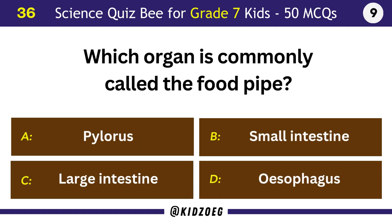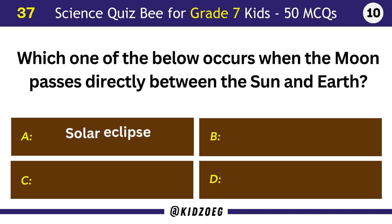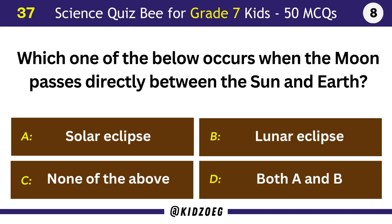Which organ is commonly called the food pipe? Esophagus. Which one of the below occurs when the moon passes directly between the sun and Earth? Solar eclipse.